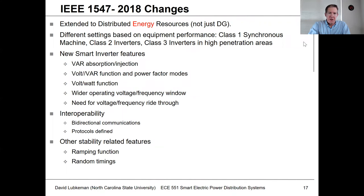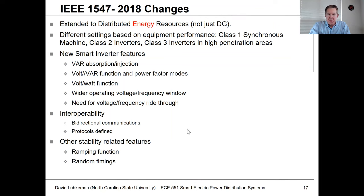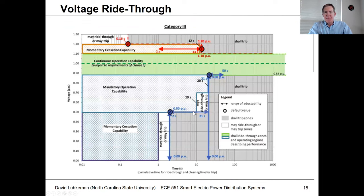Let's continue with the discussion of IEEE 1547-2018. We talked about some of the changes made since the 2003 version. This was really a major effort that took a while because they had to get a bunch of different stakeholders synced together — utilities, vendors, and consumer groups. It was in the works for a long time before it finally got approved. Something you see in here, which is a little bit mind-boggling, is this voltage ride-through curve.